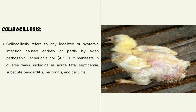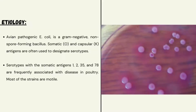It manifests in diverse ways such as fatal septicemia, subacute pericarditis, and cellulitis. Etiology: colibacillosis is caused by avian pathogenic E. coli, which is a gram-negative, non-spore-forming bacillus. Serotypes with somatic antigens 1, 2, 35, and 78 are frequently associated with disease in poultry.